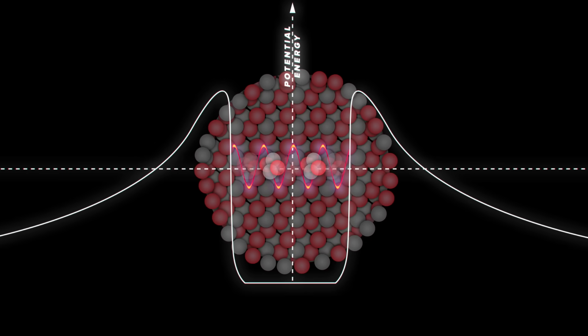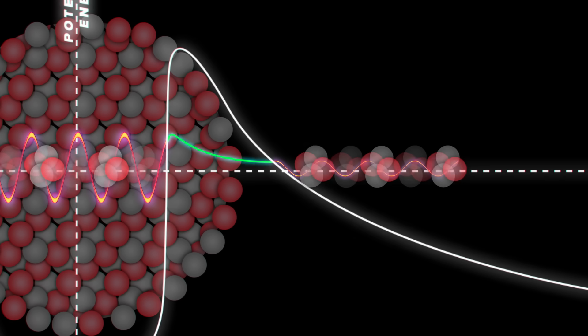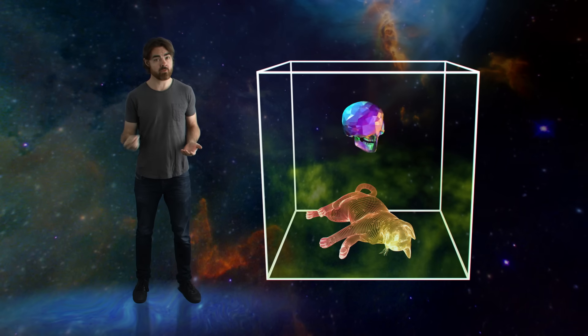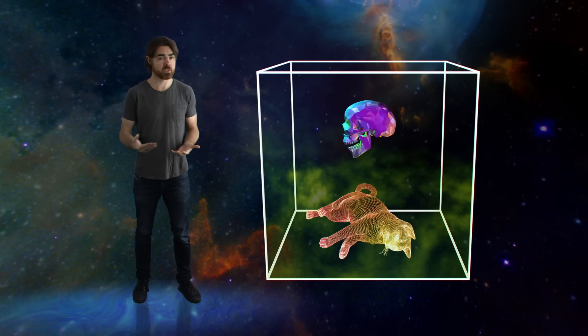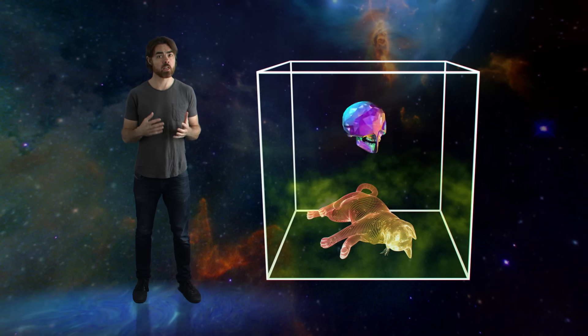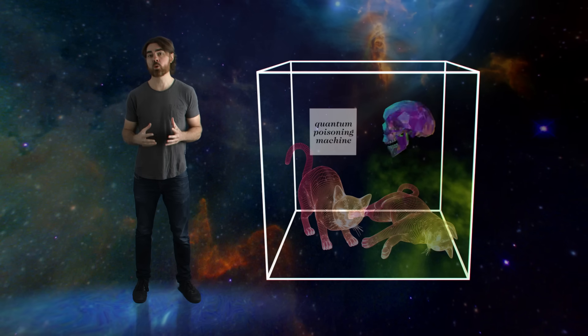That radioactive decay is a purely quantum process, and so until it's observed, it exists in a superposition of states. It has both decayed and not decayed. But doesn't that mean that the entire macroscopic system attached to that quantum event is also in superposition? If so, then the cat should be simultaneously alive and dead until we open the box.